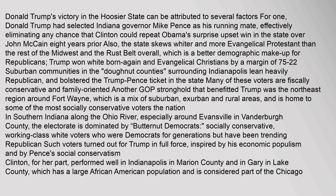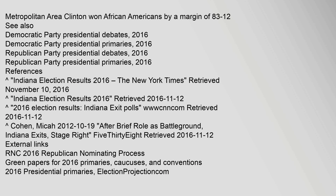Fort Wayne is home to some of the most socially conservative voters in the nation. In southern Indiana along the Ohio River, especially around Evansville in Vanderburgh County, the electorate is dominated by 'butternut Democrats' — socially conservative, working-class white voters who were Democrats for generations but have been trending Republican. Such voters turned out for Trump in full force, inspired by his economic populism and by Pence's social conservatism. Clinton performed well in Indianapolis in Marion County and in Gary in Lake County, which has a large African-American population and is considered part of the Chicago Metropolitan Area. Clinton won African Americans by a margin of 83–12.